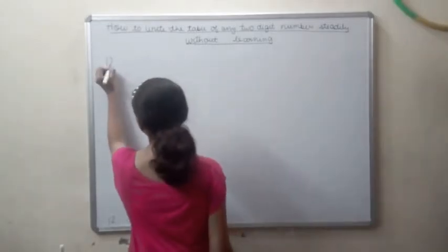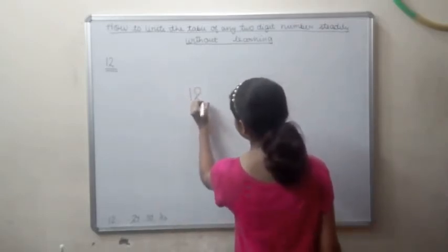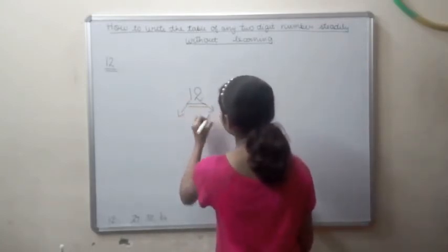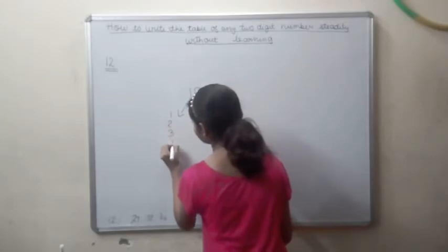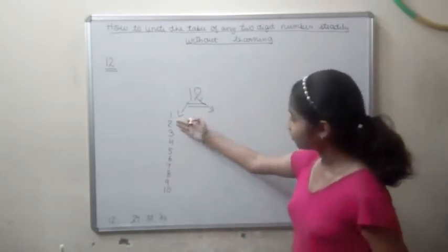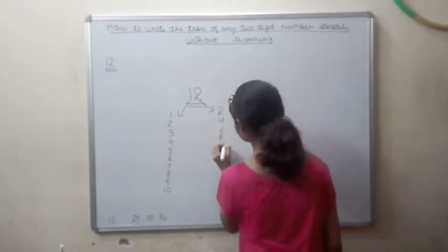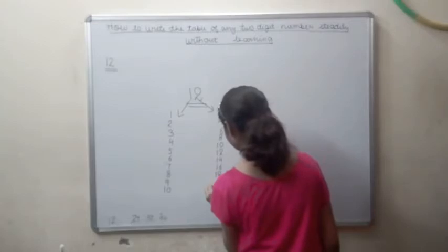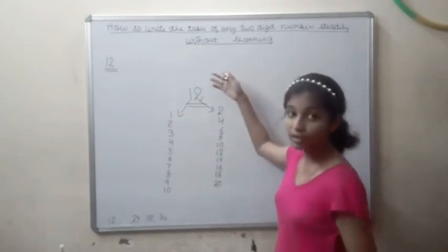Let's observe this digit. This is a number which is having two digits that is 1 and 2, and these two digits have their own respective tables. One has its own table that is we have written it and 2 has its own table. So we have written it down.